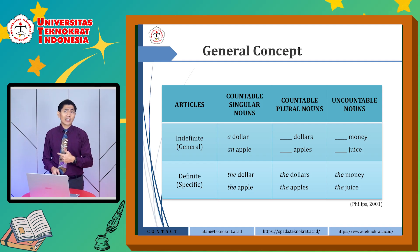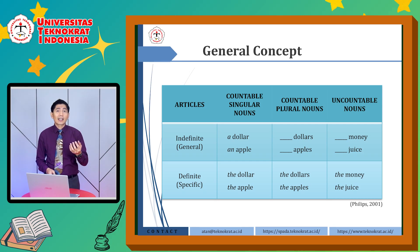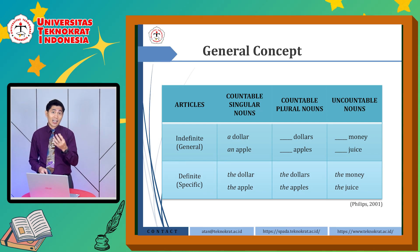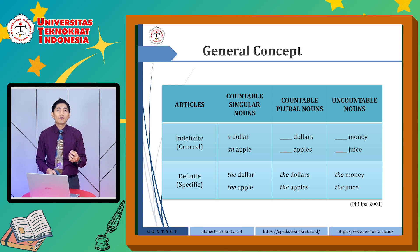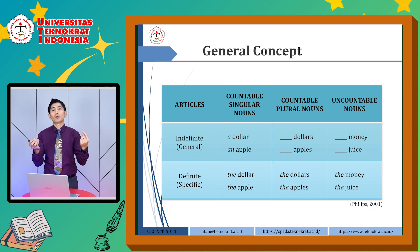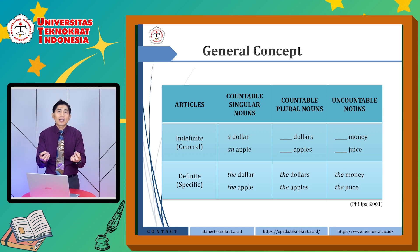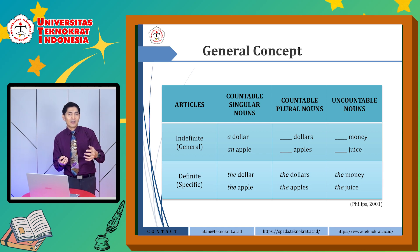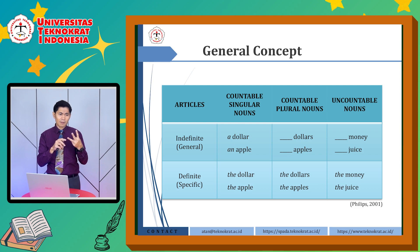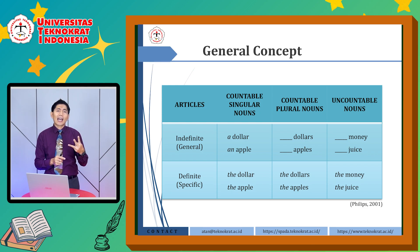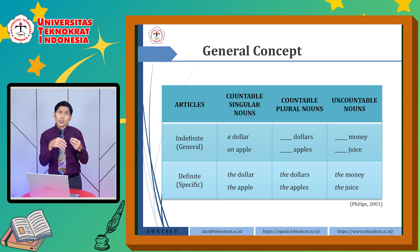So, general concept. I mentioned earlier that we have to understand countable nouns and also uncountable nouns. Especially for countable nouns, we also have to differentiate those singular and plural nouns. Because the use of these nouns will influence the use of indefinite and definite articles. So because there are three — a, an, and the — a and an are usually called indefinite articles, while the is called the definite article. They're used differently according to what kind of nouns we're talking about.